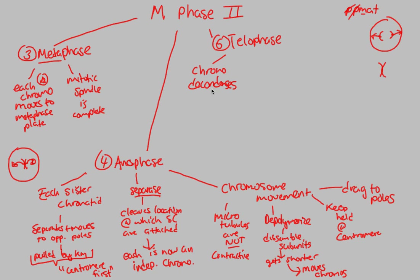So we covered Metaphase and Anaphase, and now we're on Telophase. As we decondense, we also reform the nuclear envelope — nuclear envelope reformation — because we want to put all of this genetic material into a safe spot as we're going to pinch off and develop two independent daughter cells.